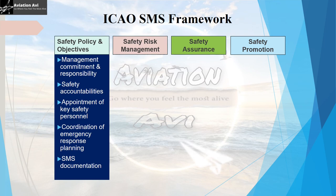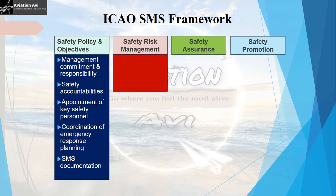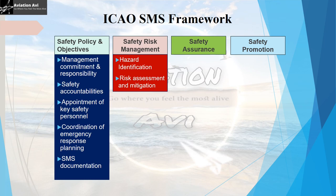The second pillar is Safety Risk Management, which has two elements: hazard identification, and risk assessment and mitigation. This pillar focuses on continuously carrying out hazard identification within an organization, implementing risk mitigation measures, and reassessing them to ensure safe operations.